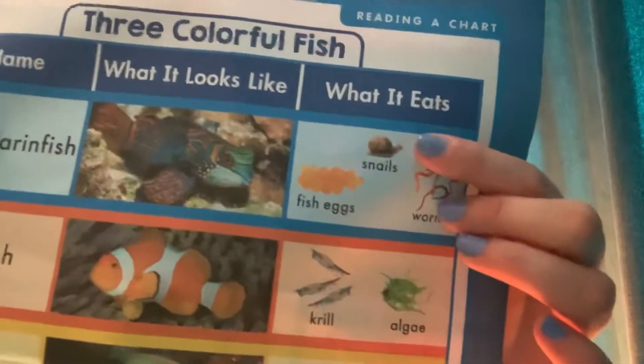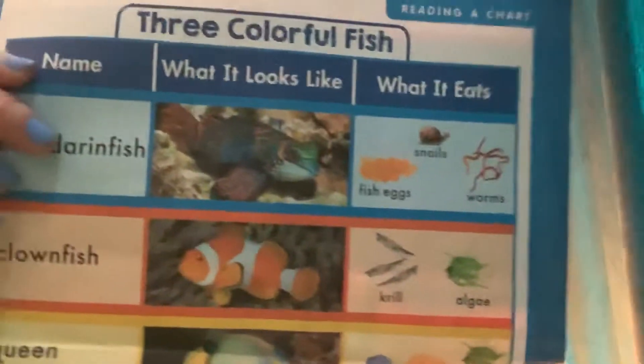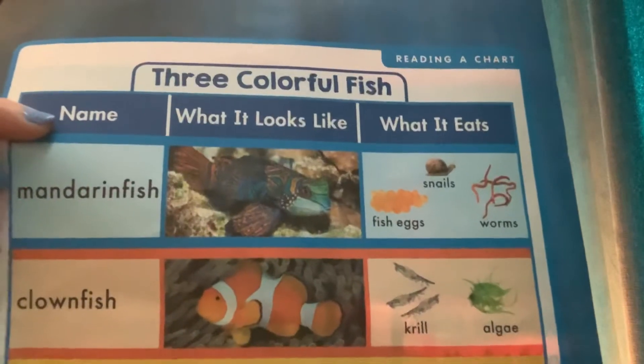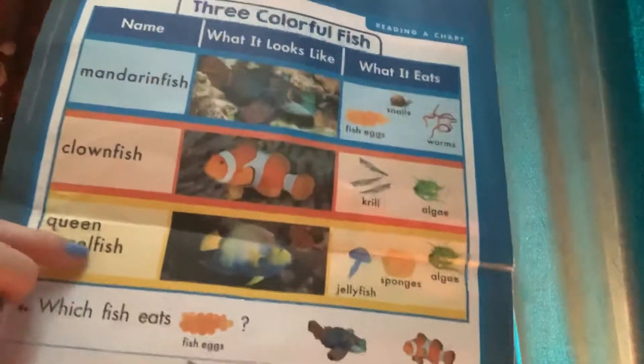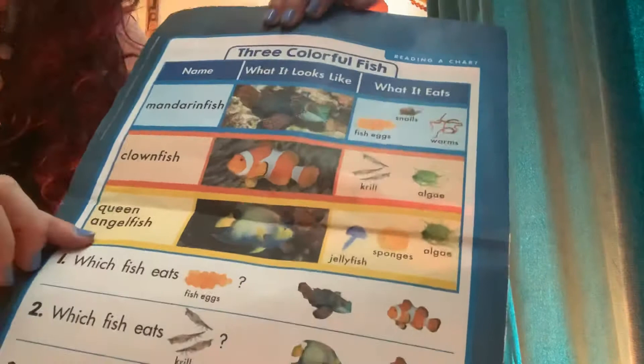The last column says what do they eat? So the Mandarin Fish eats fish eggs, snails, and worms. The Clownfish eats krill and algae. Now I'm going across — this is called a row. This row says that the Queen Angel Fish eats jellyfish, sponges, and algae.